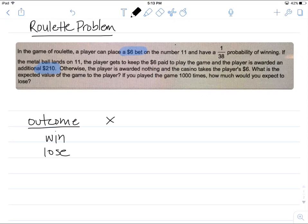Now each outcome has a value to the player. The value of winning to the player is the $210 in this particular situation, and the value of losing is a loss of $6. So you want to denote that with a negative sign.